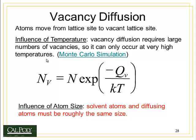For vacancy diffusion, the influence of temperature is very important. This equation defines the number of vacancies present per unit volume of material. If we take N_V, the number of vacancies, and divide by N, the number of lattice sites, we can calculate the percentage of lattice sites actually occupied by vacancies. Notice that it's equal to the exponent of negative one over the temperature. That means that as temperature goes up, N_V will also go up, exactly as we would expect.